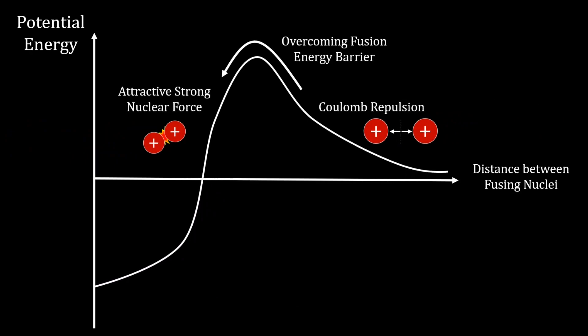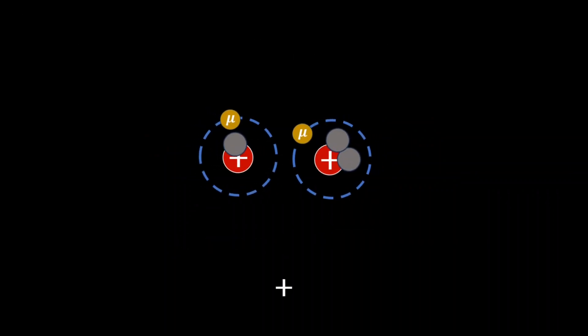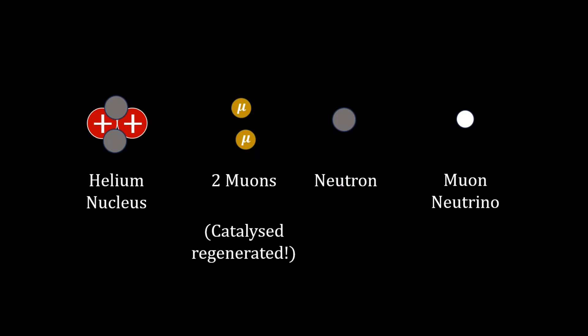This means the attractive, short-ranged, strong nuclear force can overpower the repulsive electrostatic force at normal conditions, like at room temperature. After fusion, the muon is released, allowing it to catalyze many more fusions.